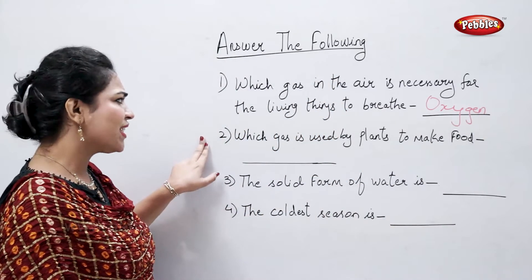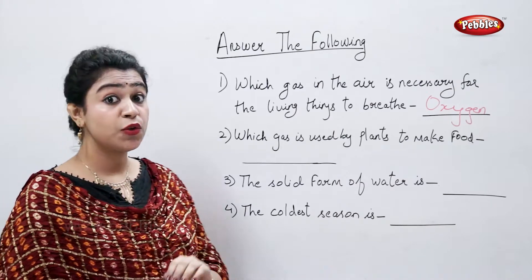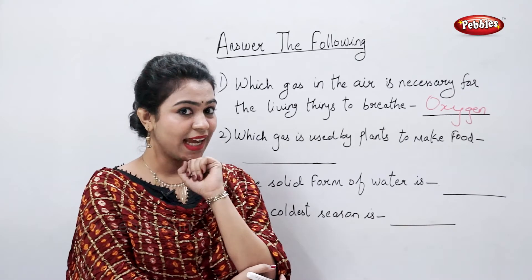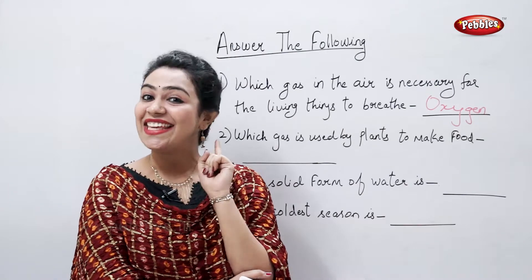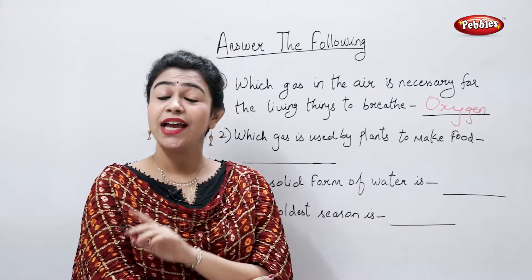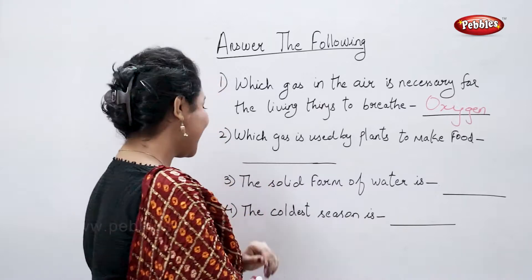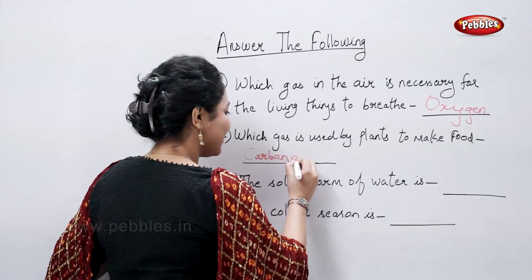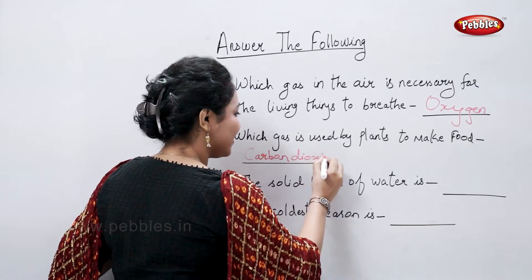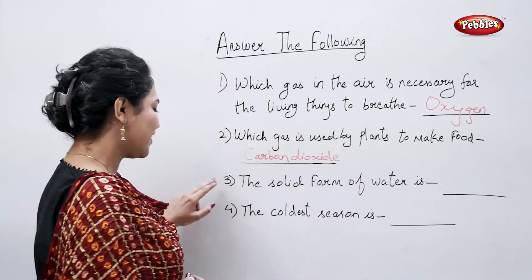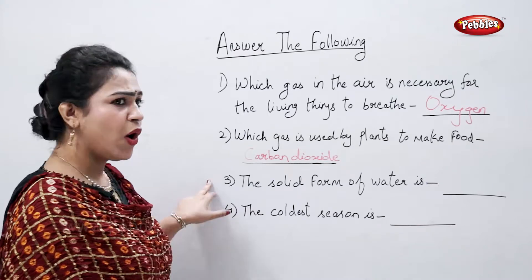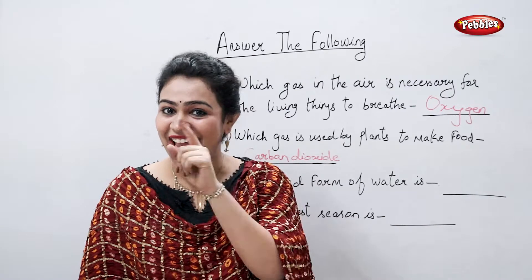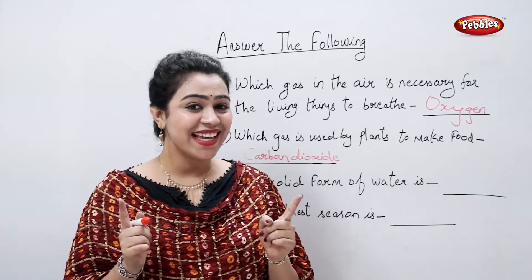Which gas is used by plants to make food? That's carbon dioxide. The solid form of water is ice.